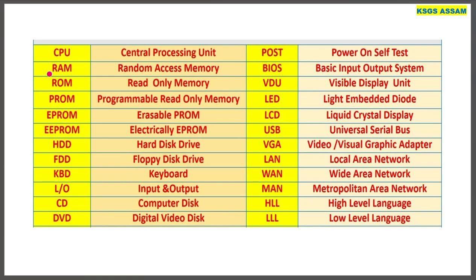Full forms: CPU — Central Processing Unit. RAM — Random Access Memory. ROM — Read Only Memory. DVD — Digital Versatile Disc. CD — Compact Disc. HDD — Hard Disk Drive. LED — Light Emitting Diode, used in TV monitors.